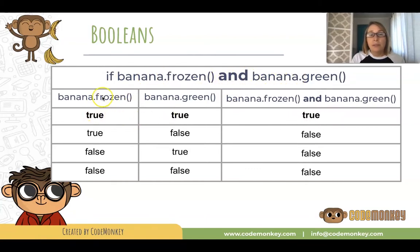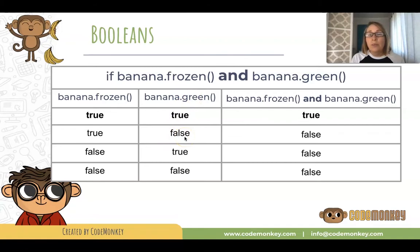Sometimes the banana will be frozen, so we'll have true, and when it's not frozen it will be false. Sometimes the banana will be green — true — but sometimes it won't be green, that'll be false. Because we're using the AND Boolean operator, only when both are true will this condition be true.